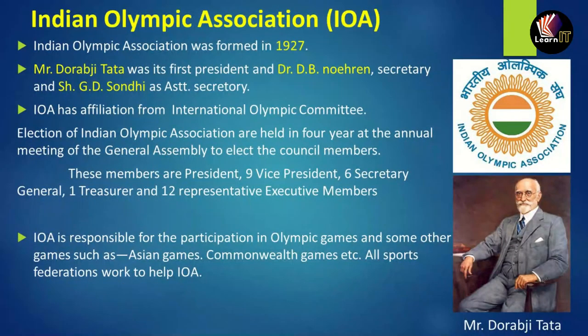Now let us talk about the Indian Olympic Association, also known as IOA. This association was formed in 1927 by Mr. Dharovji Tata, who was the first president. Dr. D.B. Nehren was the secretary, and G.D. Sondi was the assistant secretary.